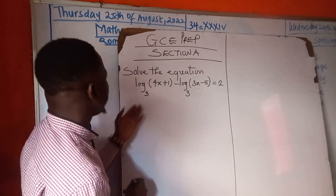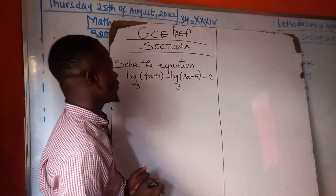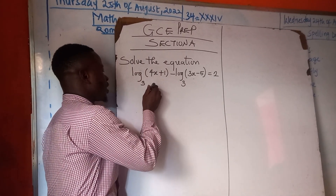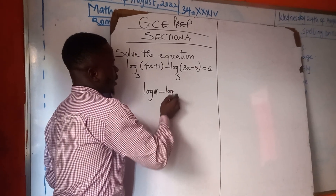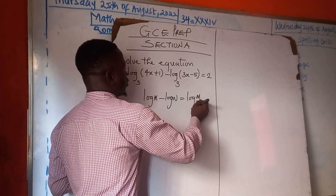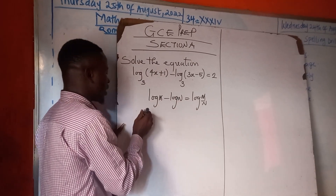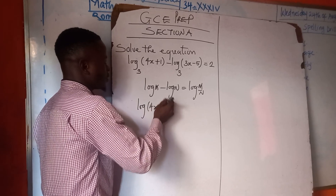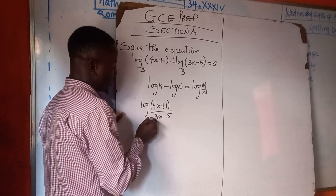The question says: from the equation log(4x+1) base 3 minus log(3x-5) base 3 equals 2. As we all know, the rule of logarithms states that log M minus log N gives us log(M/N). So we apply this rule to solve this question.